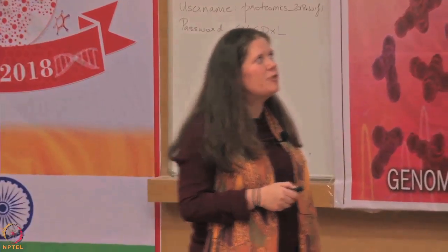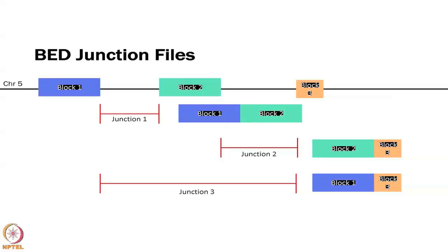The junction files from RNA-seq data give you not just reads covering different exons, but also where exons connect — junction reads. If exon 1 is spliced to exon 2, there will be a read showing they are connected; that is a junction read in BED format. If exon 2 connects to exon 3, that is junction 2. You could also get a junction connecting exon 1 directly to exon 3. These junction files come out of RNA-seq in addition to expression analysis data.